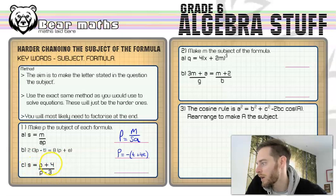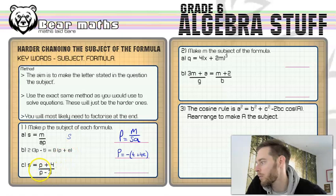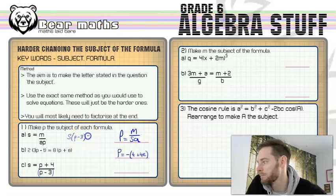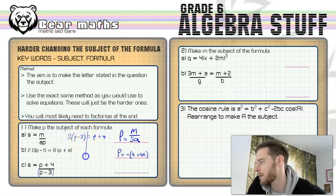S equals (p plus 4) over (p minus 3). The first thing we're going to do is multiply by (p minus 3) to get rid of it from the bottom, just like we did in the first question. So we have s in brackets — because there are two terms there which make an expression, we put it in brackets to make it one term — multiplied by (p minus 3), which equals p plus 4. Now we have two sides to the formula, so let's multiply out the bracket: sp minus 3s equals p plus 4.